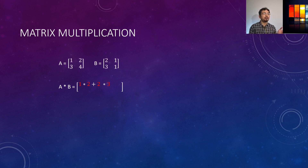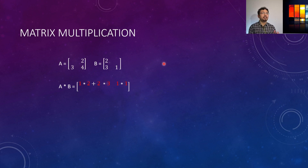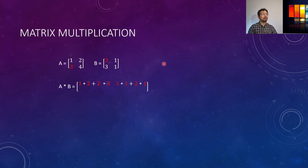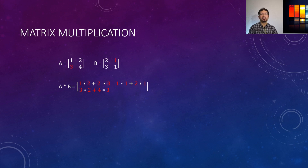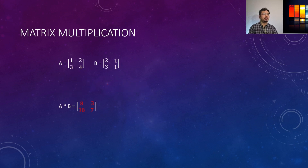For the second element, we take the second row of A and multiply it with the first column of B, giving us the other two values added together. For the third element — the first row, second column — we compute 3×2 + 4×3. And for the fourth element, we take 3×1 + 4×1. If we calculate everything, this is the result of the matrix multiplication.